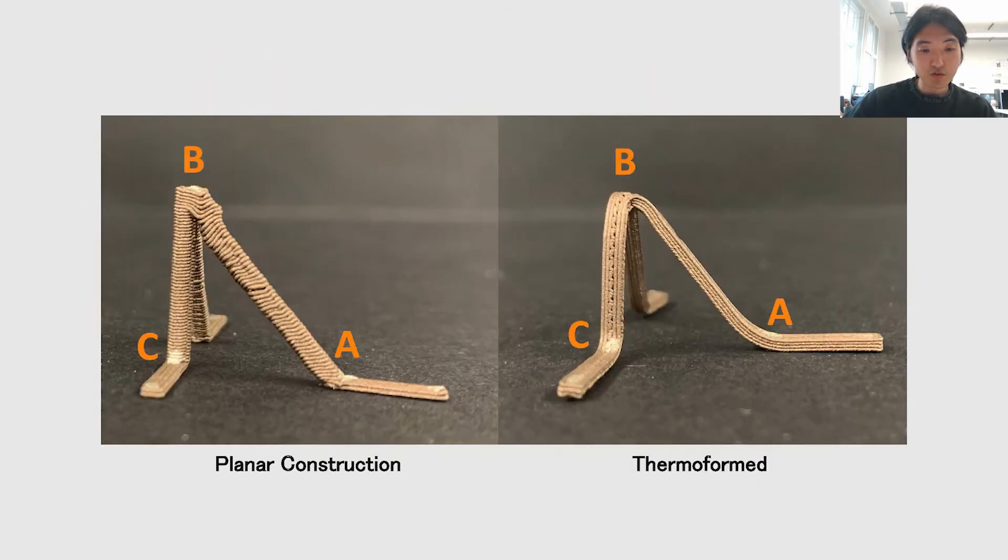Current problem with 3D printing interactive objects using conductive PLA is that the resistance of the printed trace is too high that is only useful for lighting LEDs or constructing capacitive sensors. Furthermore, due to the inherent characteristic of the layer-by-layer construction of additive manufacturing, the resistance of the printed trace differs for every angle. The resistance of printed trace for vertical direction is at least seven times higher than the traces for horizontal directions. This severely limits the design freedom of 3D printed electronics beyond the XY plane.